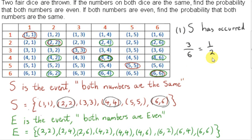So we can say that on average, whenever event S occurs — that is, whenever both numbers are the same on the throw of two fair dice — then half the time both numbers will be even. The condition here is that event S has occurred, so we are not selecting from 36 equally likely outcomes, but from six equally likely outcomes.